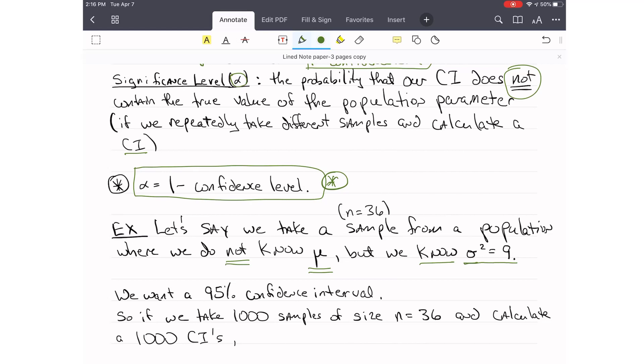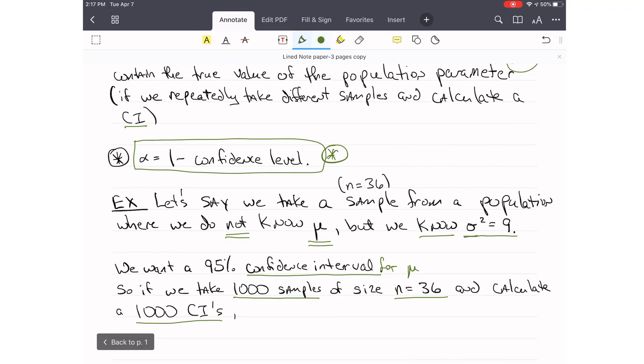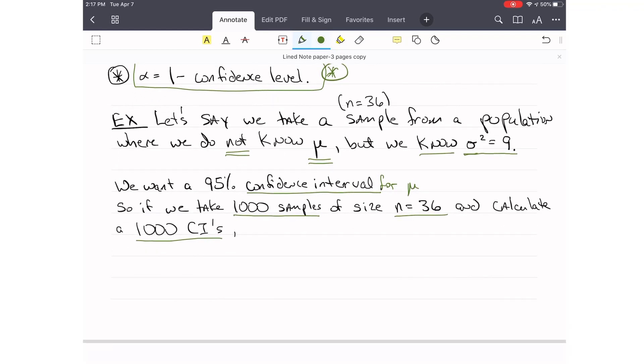when we don't know what sigma is. Let's say we want a 95% confidence interval for the mean, for mu. So if we take 1,000 samples of 36 each, and for each of these samples we calculate a confidence interval, we're going to have 1,000 confidence intervals. So if we have a 95% confidence level, 95% is equal to 0.95.